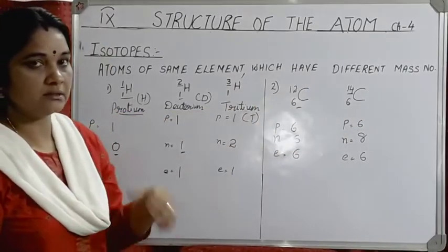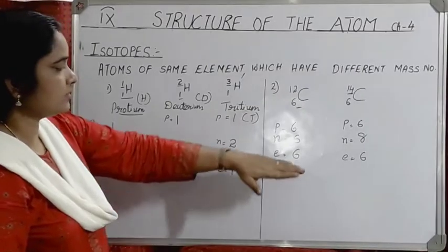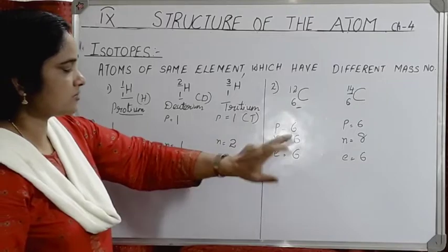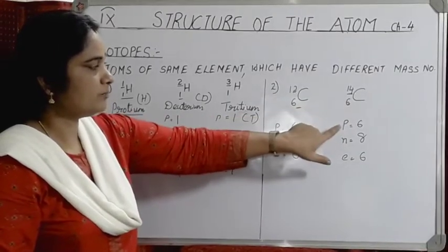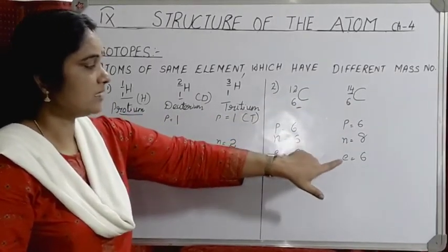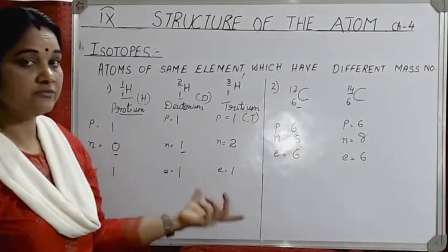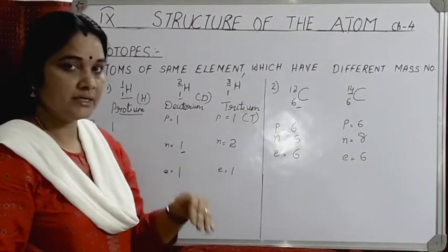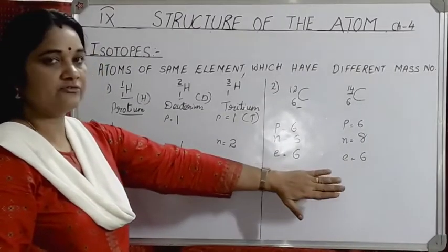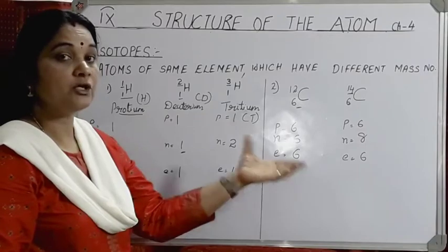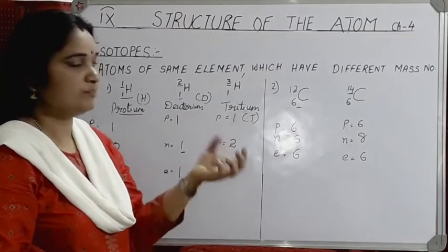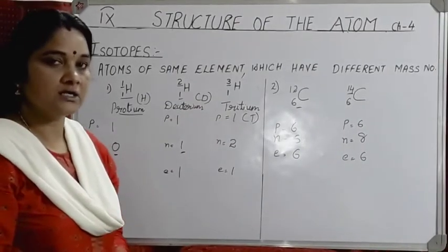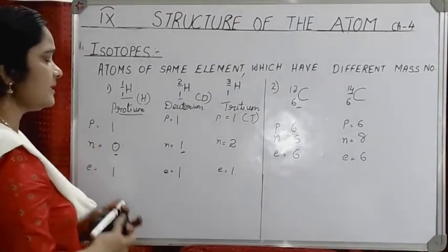Carbon-14 has the same atomic number 6 (protons = 6, electrons = 6) but mass number 14, so neutrons = 14 − 6 = 8. The subatomic particle that differs between isotopes is the neutron. Carbon-12 and carbon-14 are isotopes — same number of protons and electrons, but different neutrons and therefore different mass numbers.